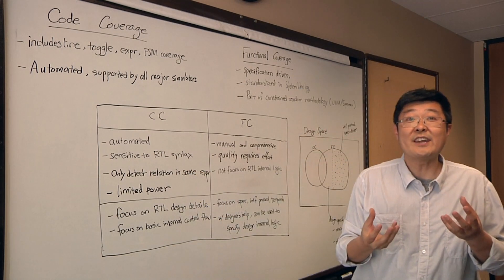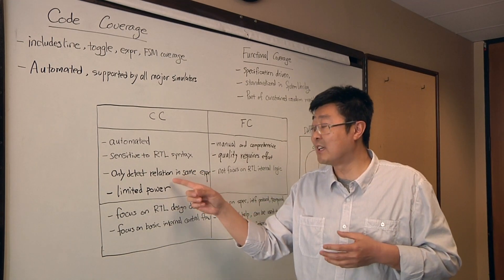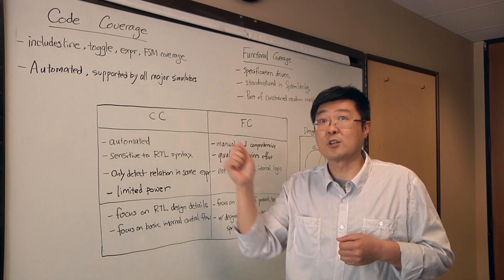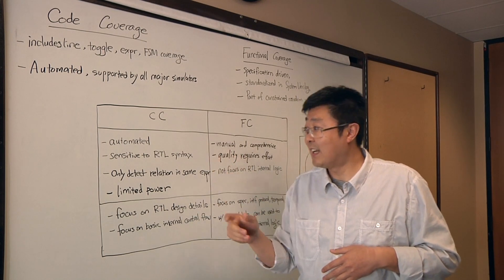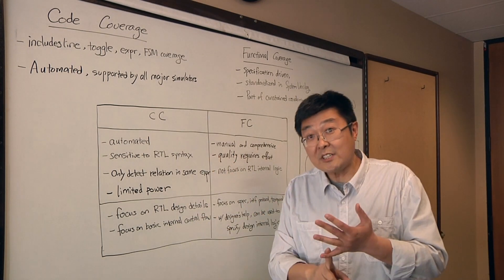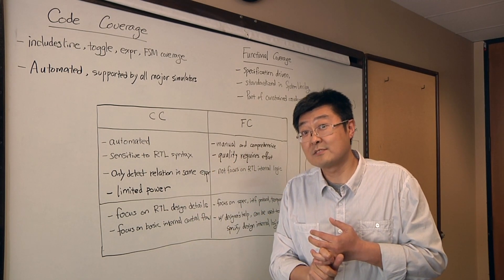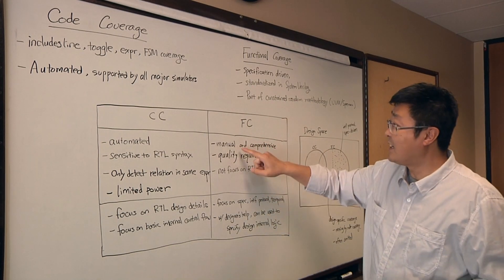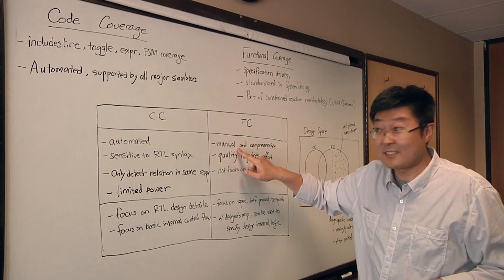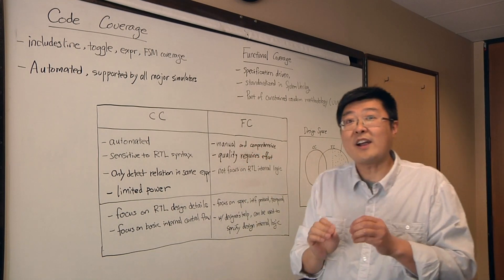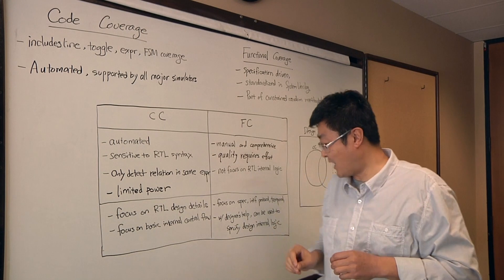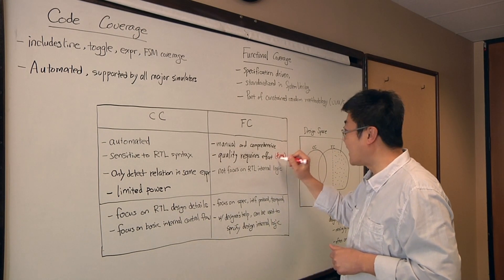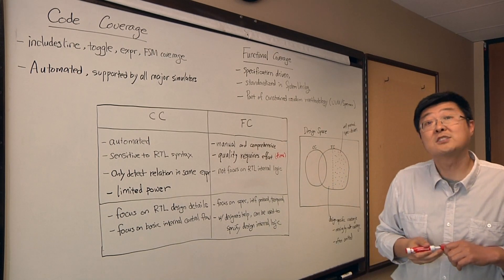Some corner cases, if not described in the same expression, are not revealed by code coverage, therefore missed. It's automated but has limited power. On the other hand, functional coverage, as we discussed, is a manual process. The quality requires effort. Effort means time. Engineers need to spend time in order to give high-quality functional coverage.